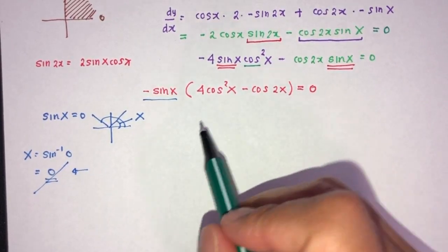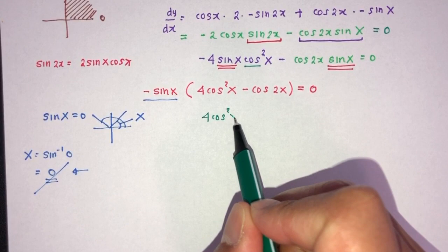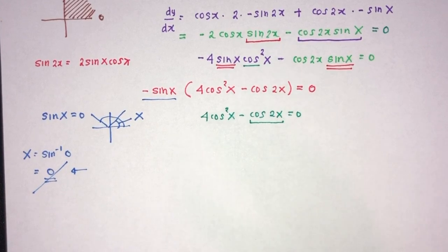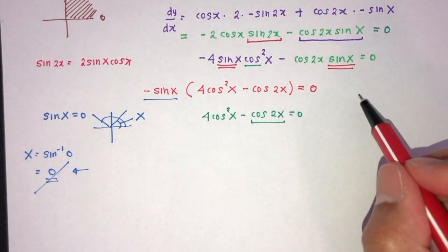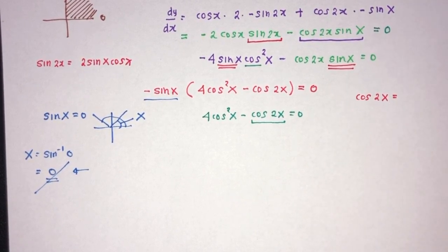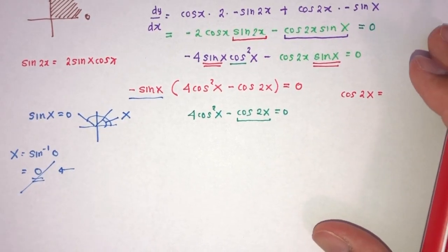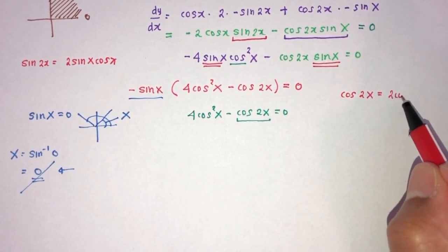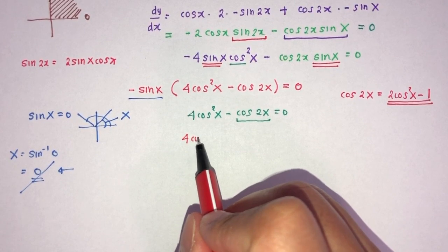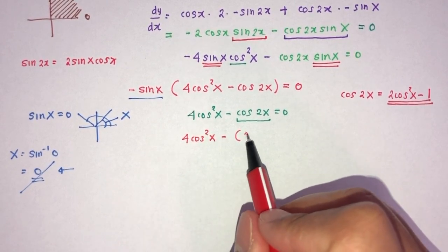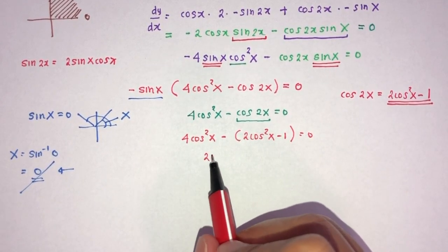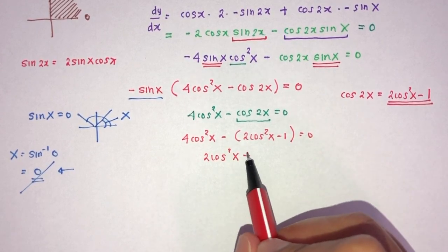So let's use the second factor: 4 cos squared x minus cos 2x equals 0. We should know that cos 2x is equal to 2 cos squared x minus 1. Substituting in, we get 4 cos squared x minus (2 cos squared x minus 1) equals 0, which should become 2 cos squared x plus 1 equals 0.